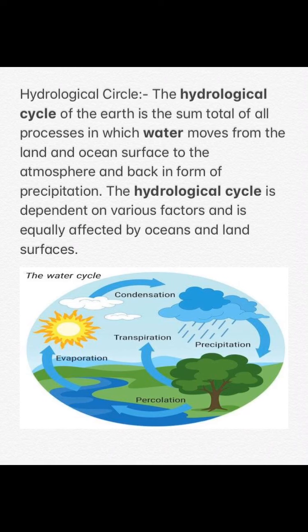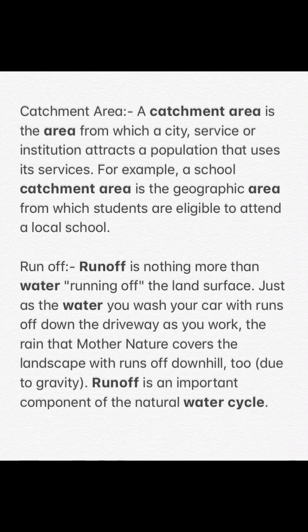The hydrological cycle depends on various factors and equally affects the ocean and land surface. You can see in the image: first, the evaporation of the ocean, then the condensation, then the precipitation and rain. This is the hydrological cycle.